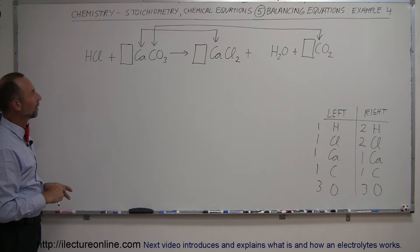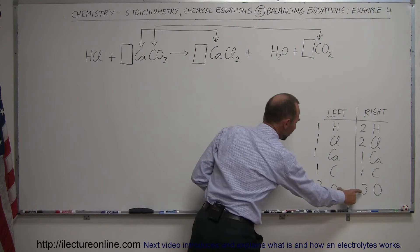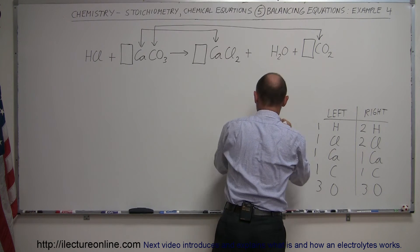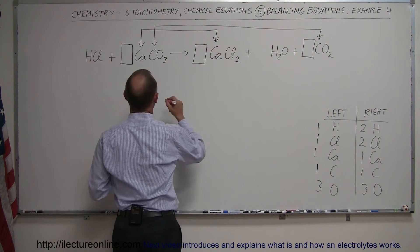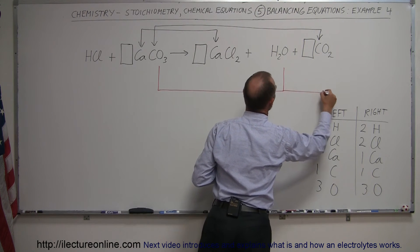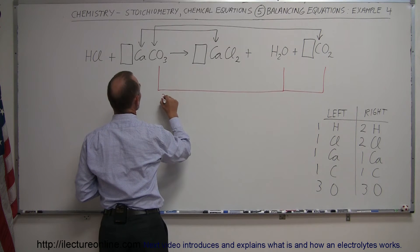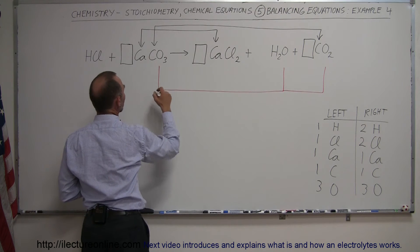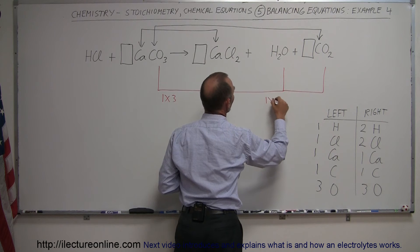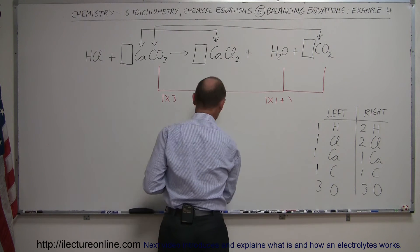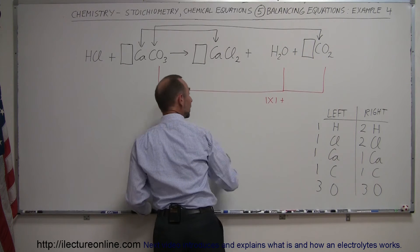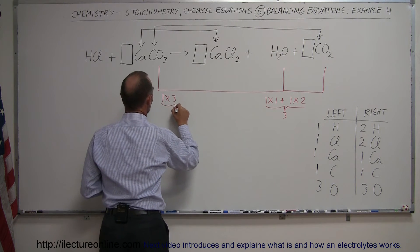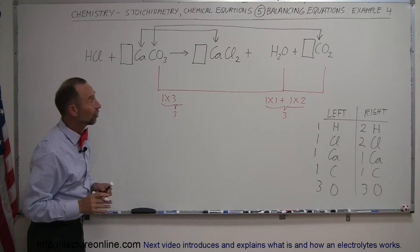We're still left with hydrogen and oxygen. For oxygen, we know it's currently balanced. We have three oxygens on the left — one times three from calcium carbonate. On the right, we have one times one from water plus one times two from carbon dioxide, which adds up to three. So oxygen is balanced.